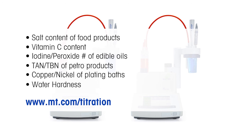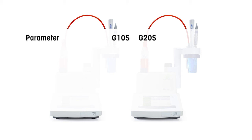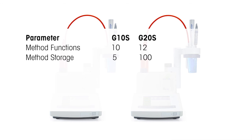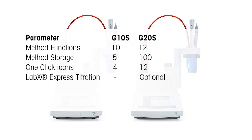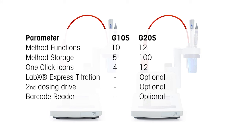Let's take a quick recap of the differences between the G10S and the G20S. The G10S has a maximum of 10 method functions; the G20S can have 12. The G10S has memory for 5 methods; the G20S can hold up to 100. Up to 12 icons can be placed on the G20S's home screen versus 4 on the G10S. The use of LabX Express titration software, a second drive, and a barcode reader are only possible on the G20S.